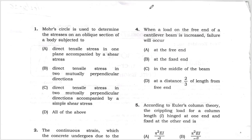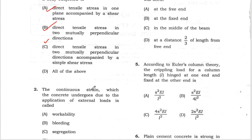First, let's look at question number 1. Mohr's circle is used to determine the stress on an oblique section of a body subjected to direct tensile stress in one plane accompanied by shear stress, direct tensile stress in two mutually perpendicular directions, then direct tensile stress in two mutually perpendicular directions accompanied by a simple shear stress. The correct option is option D.